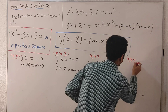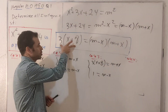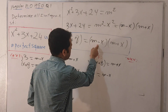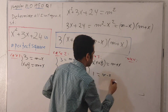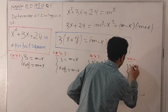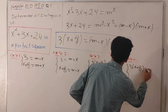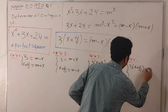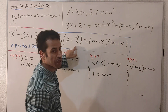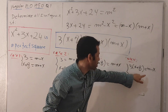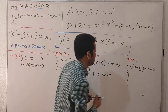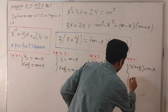For case number four, the entire left-hand side equals just (m minus x). So we have 3(x + 8) = (m minus x), which means 1 is taking (m plus x), giving us 1 = (m plus x).